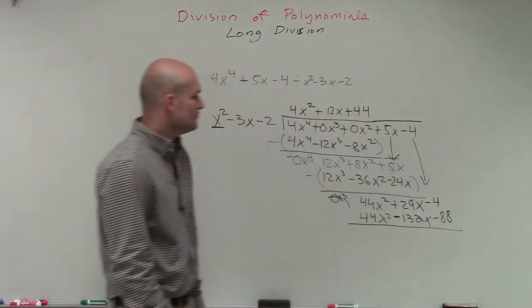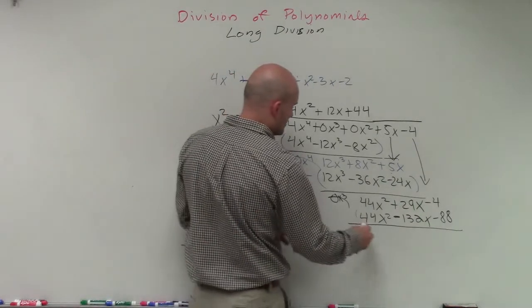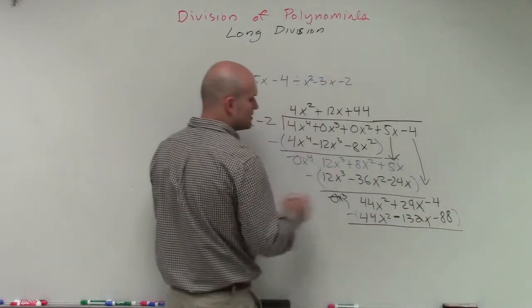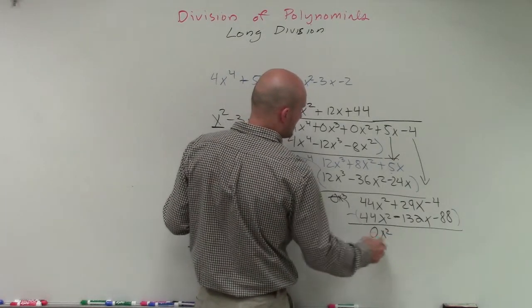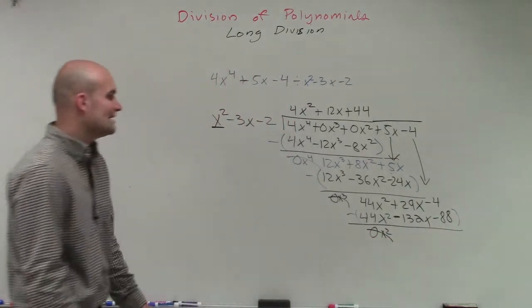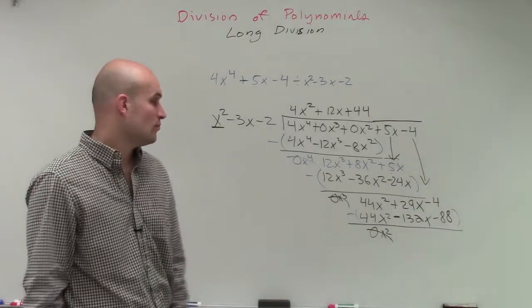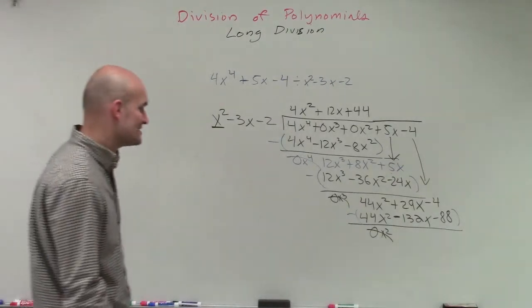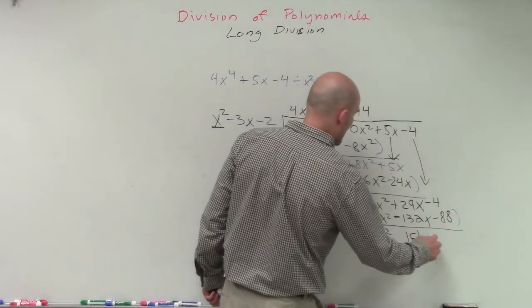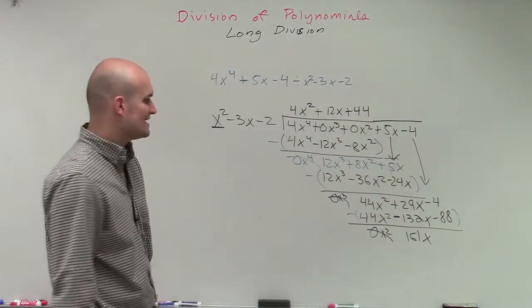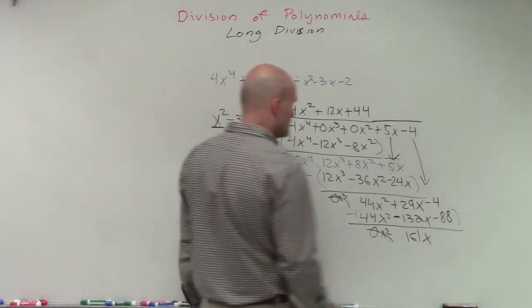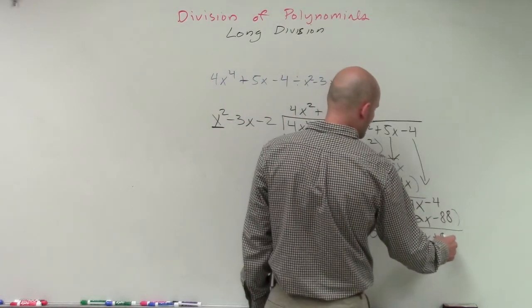OK, so 44x squared minus, oh, got to make sure I put them in parentheses and then subtract. 44x squared minus 44x squared is going to be 0x squared, which is just 0. 29x minus a negative 132x is now going to be a positive 161x. And then we have negative 4 minus a negative 88, which is going to be positive 84.